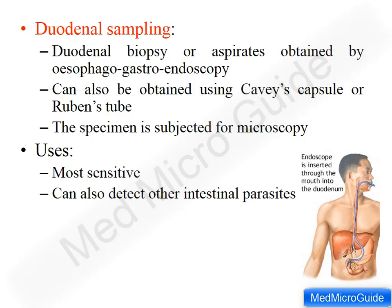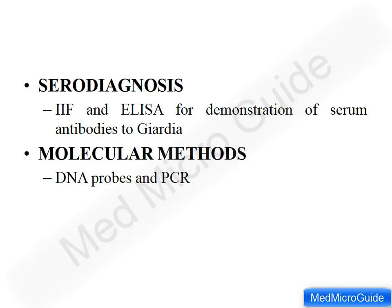For serodiagnosis: since Giardia does not cause invasive disease, antibodies are produced minimally or may not be found. In severe infection, antibodies can be demonstrated using indirect immunofluorescence or ELISA. DNA probes and PCR can also be performed for diagnosis of Giardia from stool specimens.